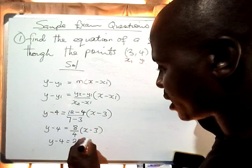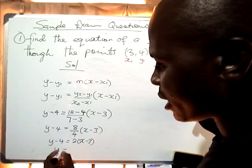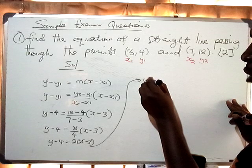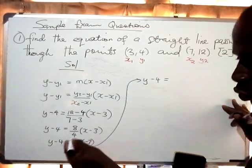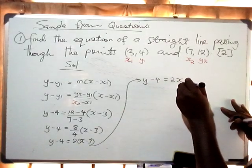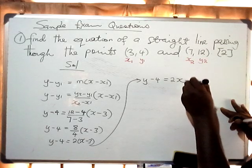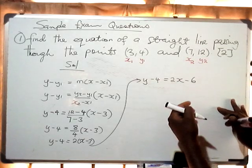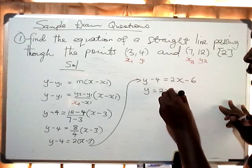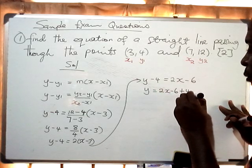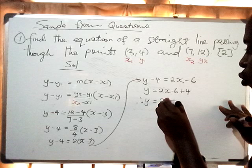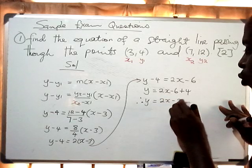So we have y minus 4 equals 2 times open bracket x minus 3. We expand: 2 times x is 2x, 2 times 3 is 6, so we get y minus 4 equals 2x minus 6. Therefore y equals 2x minus 6 plus 4, which gives y equals 2x minus 2. This is the equation of the straight line.